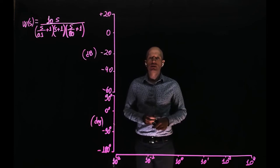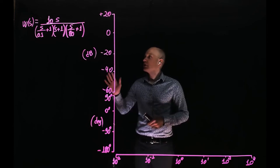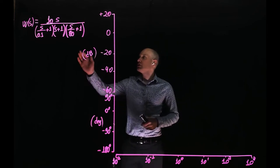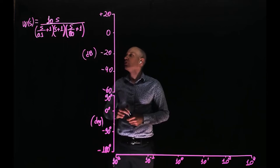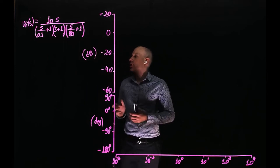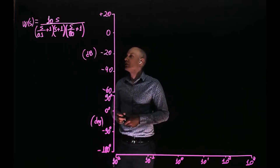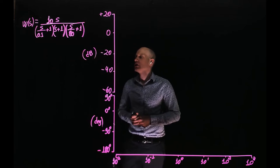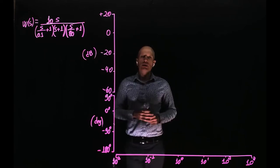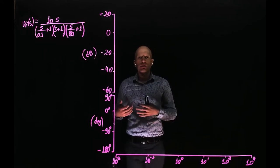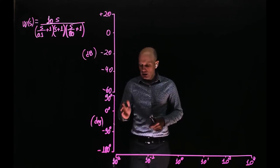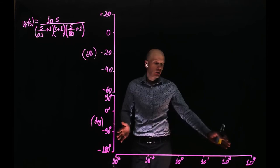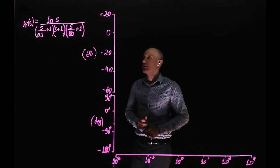In this example, we are going to draw the Bode plot of this function. This function has a zero at the origin and three real poles. The cutoff frequencies of these real poles are 0.1, 1, and 80 radians per second. Let's use the same approach as in the previous exercise and look at lower frequencies and then make our way towards the higher frequencies.